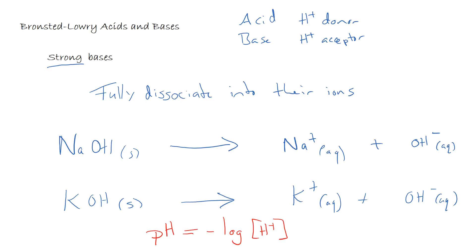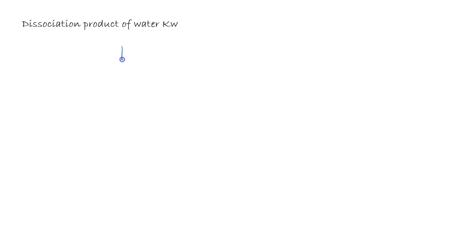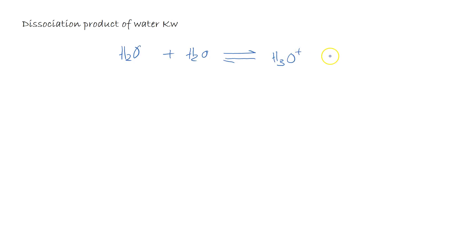That's where we're going to look at the dissociation product of water. If we look at the dissociation of water, we will see that it's a reversible reaction, and we form the hydroxonium ion and the hydroxide ion, OH⁻. These we can describe as liquids and these as aqueous.